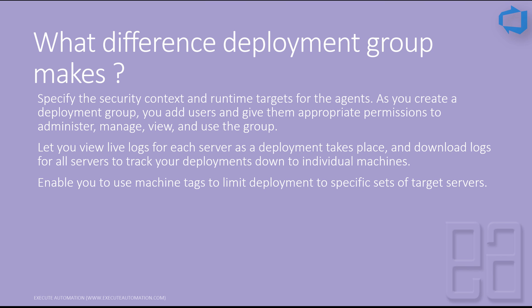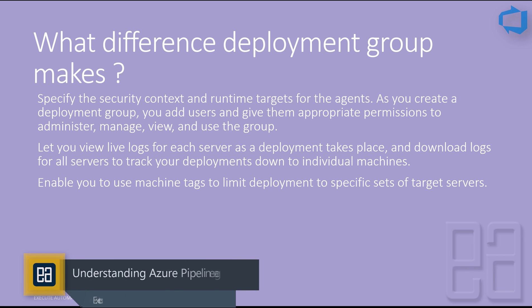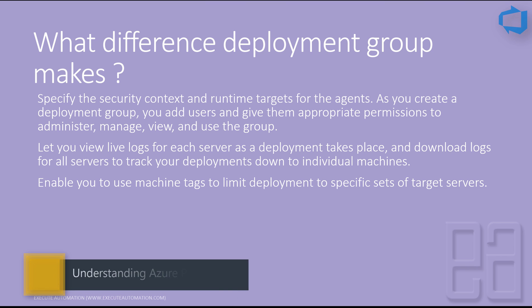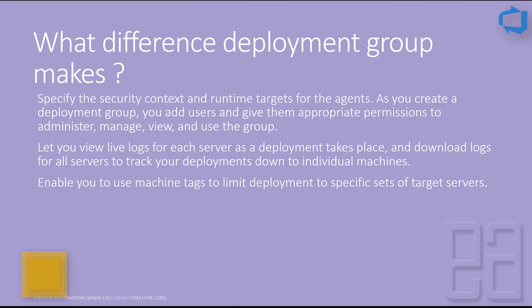Deployment groups also enable machine tagging to limit deployments to specific target servers. You can tag machines as test, development, or staging machines and specify in which machines to perform the deployment, instead of deploying to all machines. This grouping capability is very powerful when working with deployment pipelines.